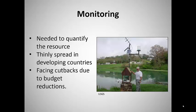Adequate monitoring is needed to help define the scope of the problem and to detect trends, both good and bad. Unfortunately, our efforts to monitor the quantity and quality of global water resources are spread very thinly, especially in developing countries. And in some developed countries, such as the U.S., long-term monitoring programs are losing stations every year due to budget cuts and policy decisions.